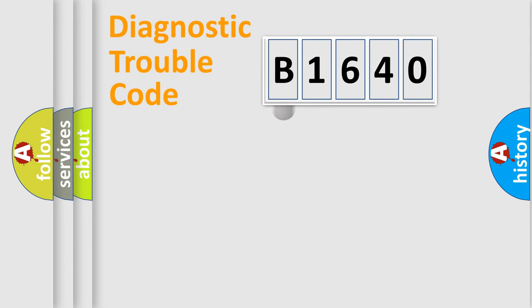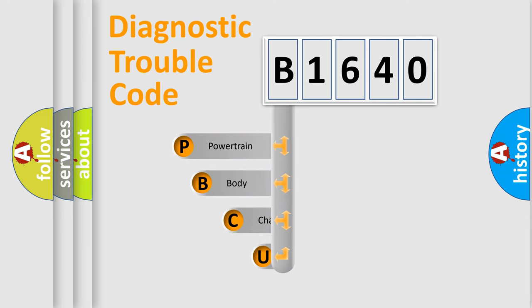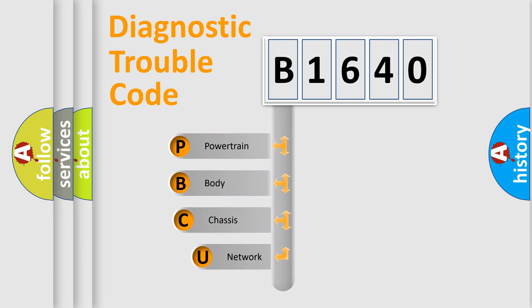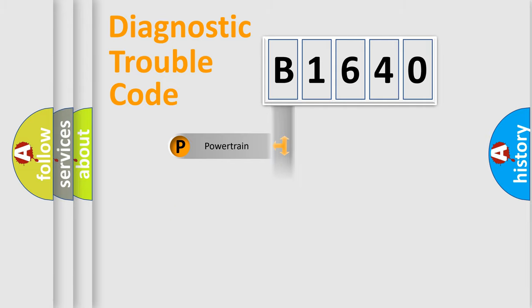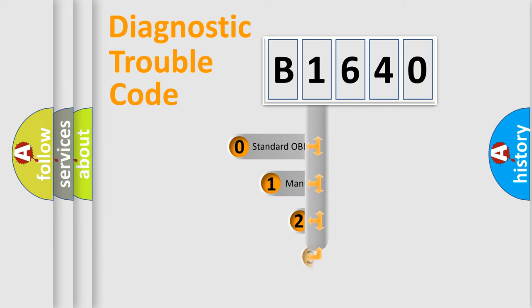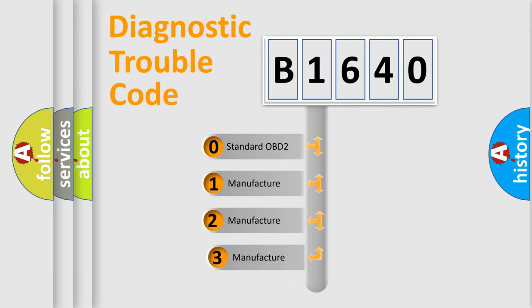Let's do this. First, let's look at the history of diagnostic fault code composition according to the OBD2 protocol, which is unified for all automakers since 2000. We divide the electric system of an automobile into four basic units: Powertrain, Body, Chassis, and Network. This distribution is defined in the first character of the code.